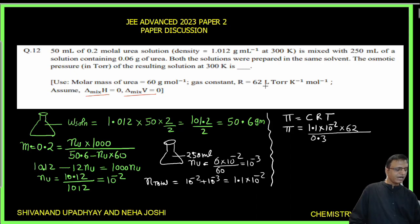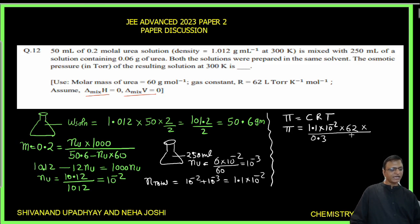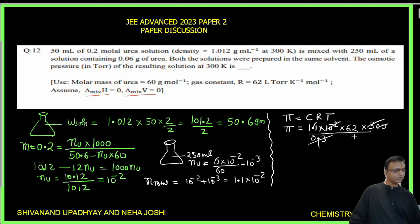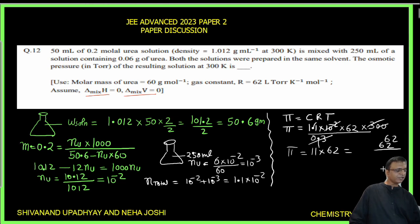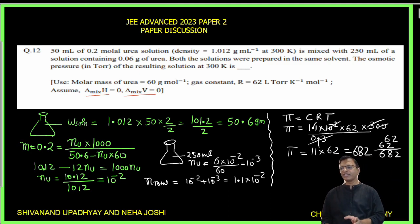π = 1 × (1.1 × 10⁻²/0.3) × 62 × 300. Simplifying: the 0.3 and 300 give a factor of 1000/1 after simplification, 10⁻² cancels with part of the arithmetic. Result: π = 11 × 62 = 682 torr. Answer for question 12 is 682. This is a straightforward, doable question from liquid solutions.